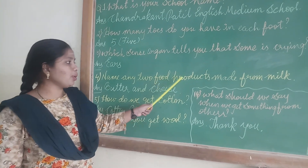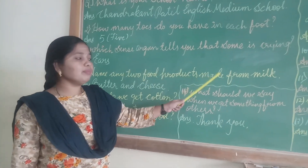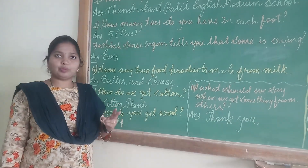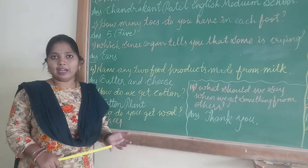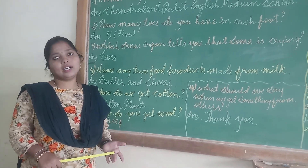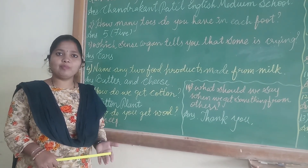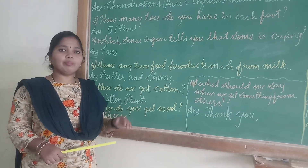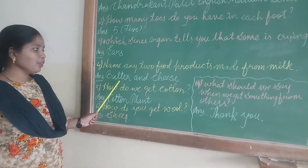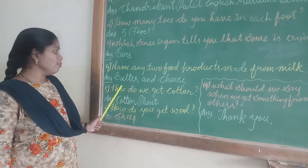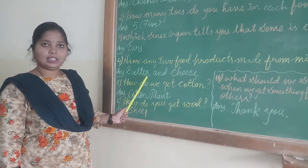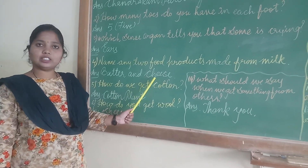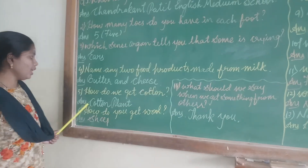Next: Name any 2 food products made from milk. You have to write only 2 food products which are made from milk. There are so many — butter, cheese, curd, ghee. So many food products are made from milk. Here we have written butter and cheese. B-U-T-T-E-R, butter, and C-H-E-E-S-E, cheese.